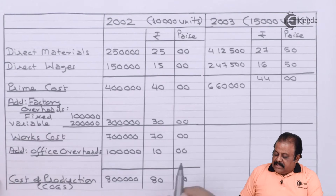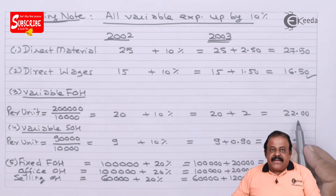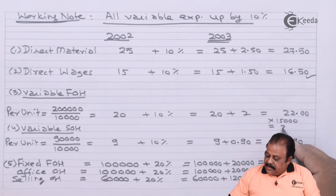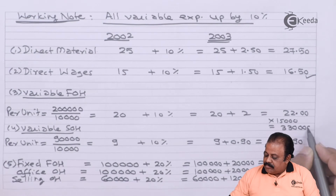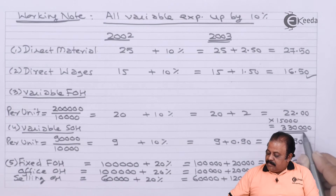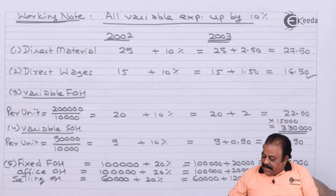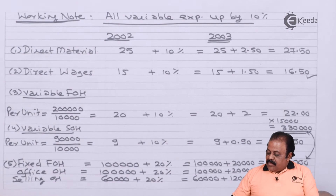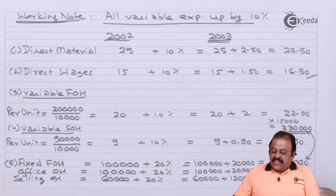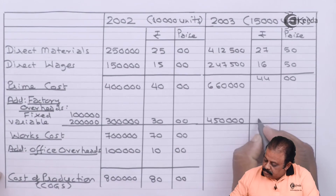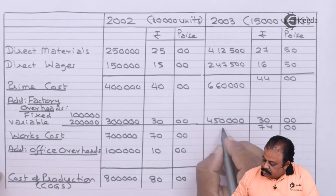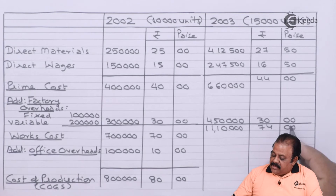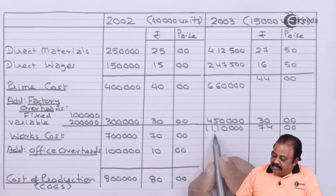Next we add factory overheads. Variable factory overheads: ₹22 per unit multiplied by 15,000 units equals ₹3,30,000. Fixed factory overheads revised: ₹1,20,000. Total factory overheads: variable ₹3,30,000 plus fixed ₹1,20,000 equals ₹4,50,000. Per unit factory overheads: ₹30. Works cost per unit is ₹74, total ₹11,10,000.